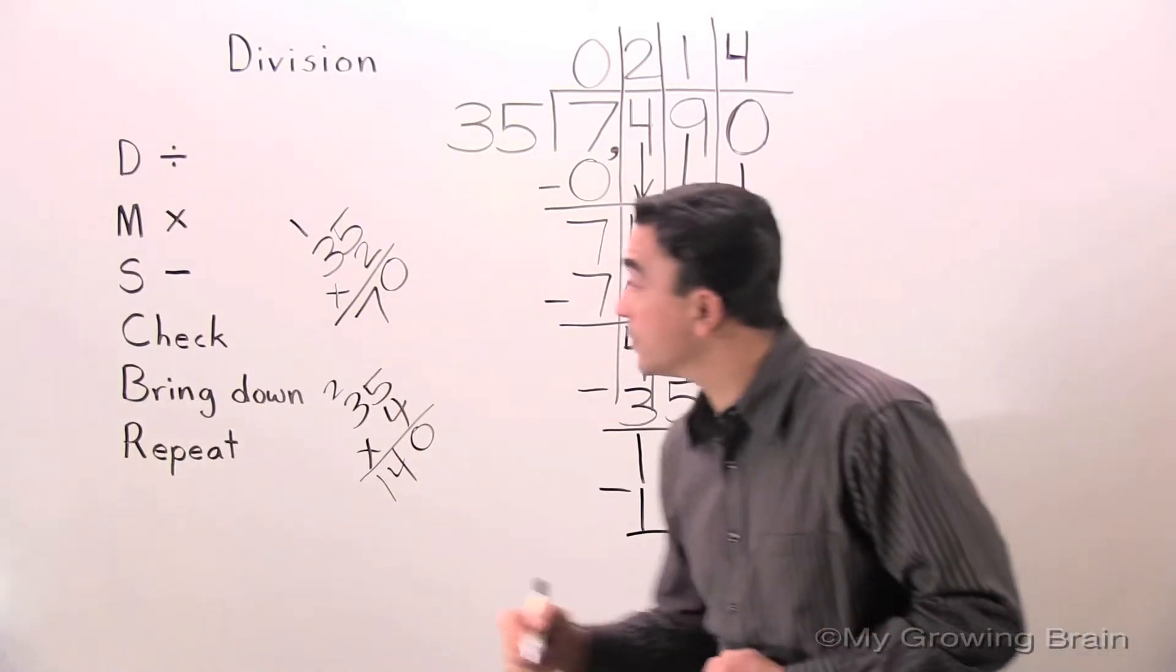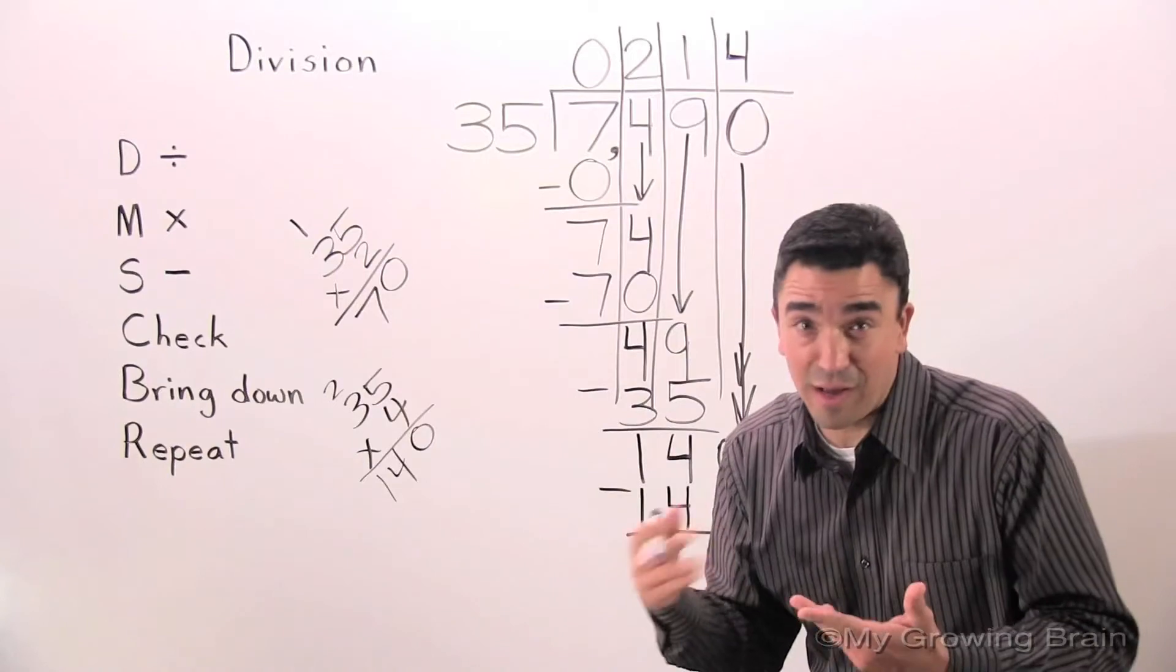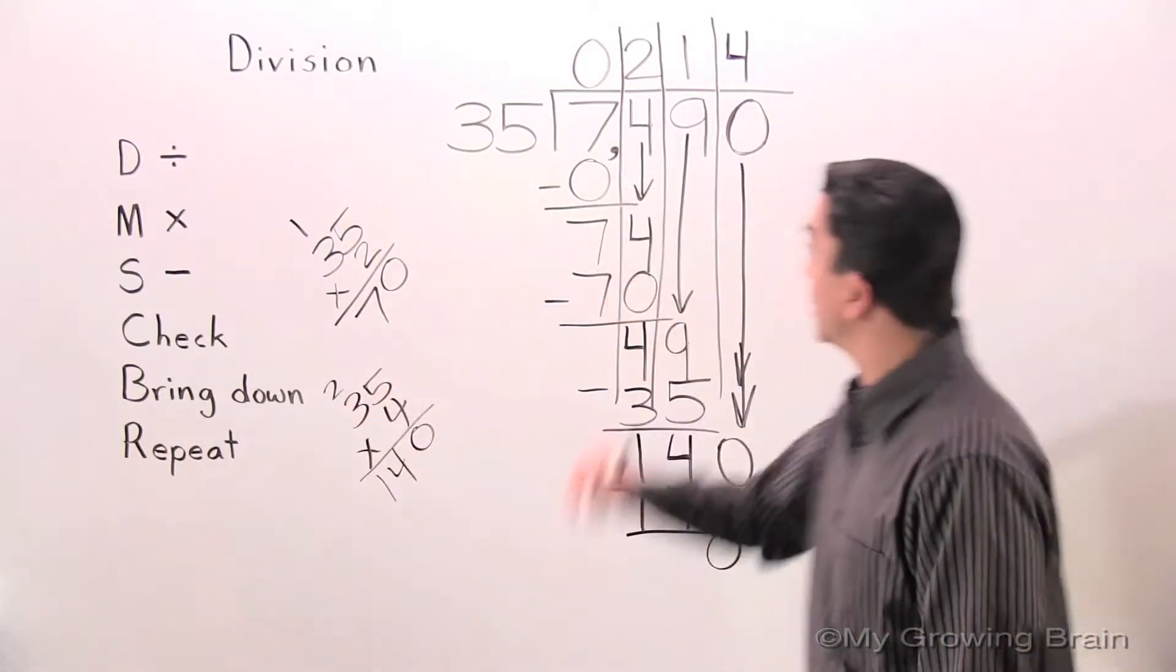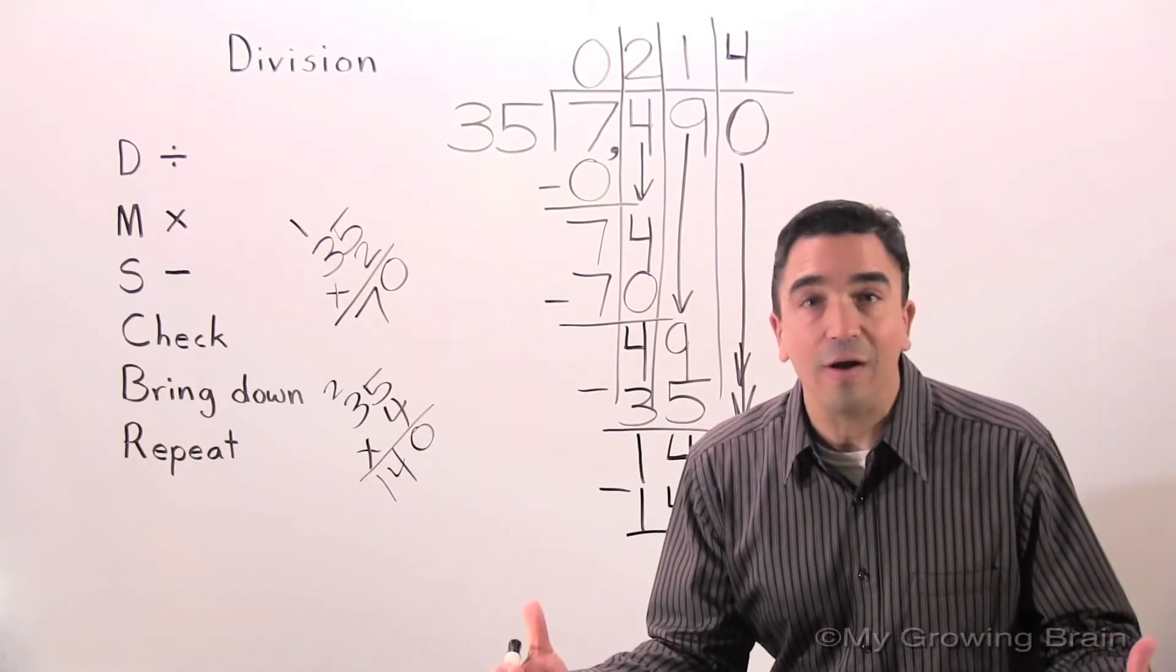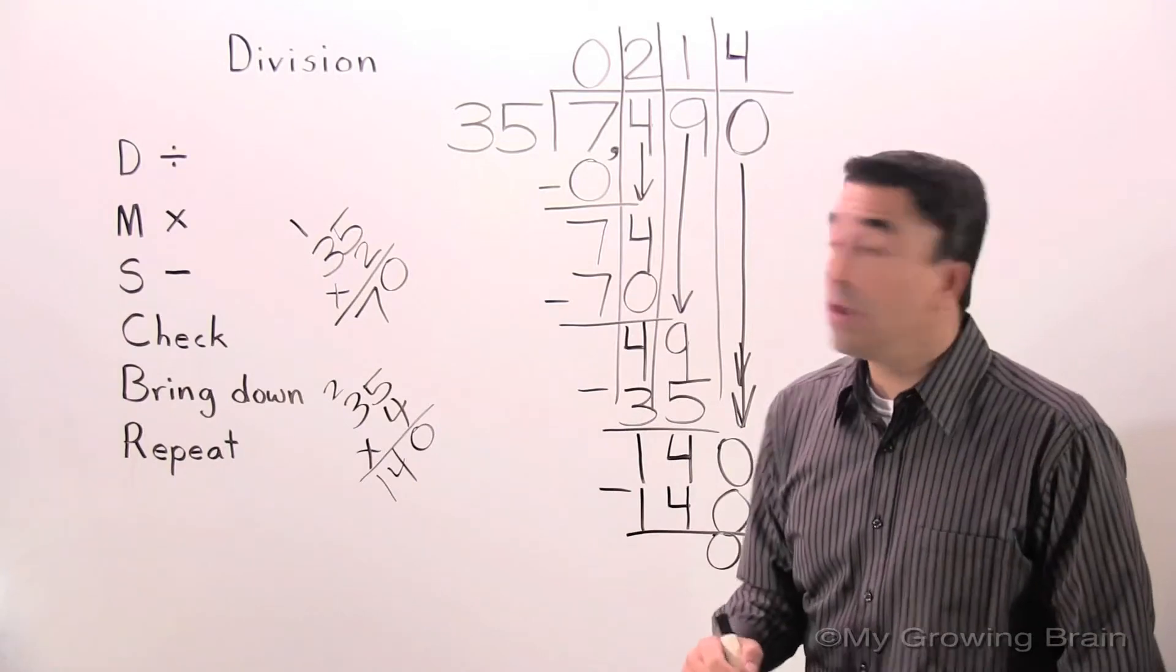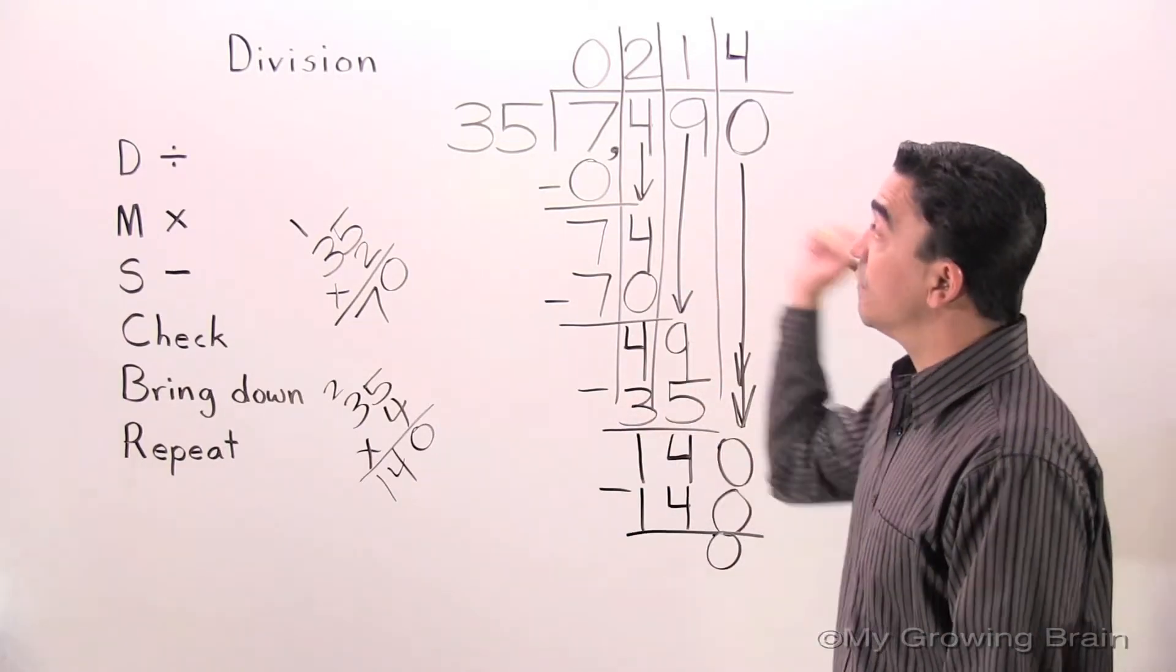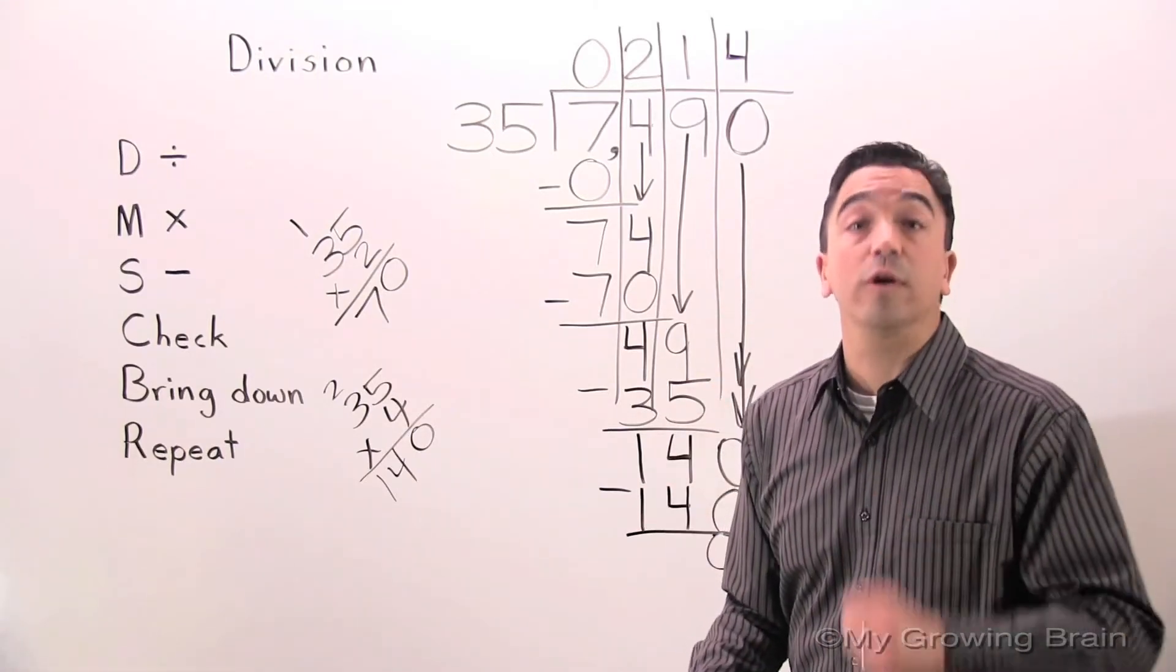Next step. Check. Zero is less than 35. Keep on going. Bring down. There's nothing there. Therefore, 7,490 divided by 35 gives us a quotient of 214.